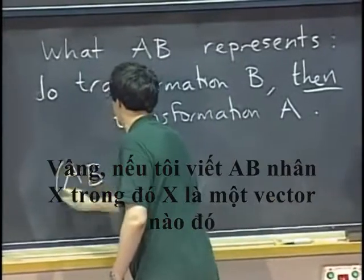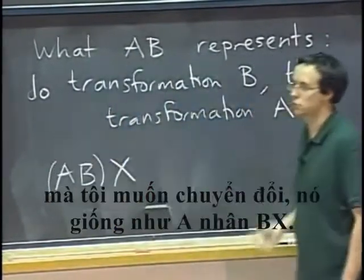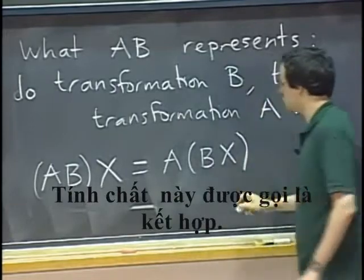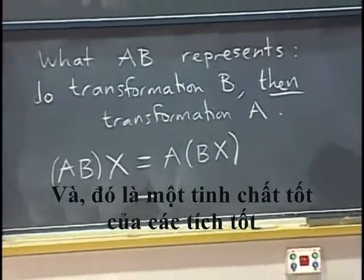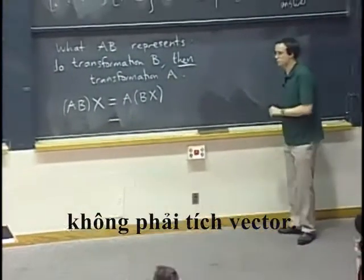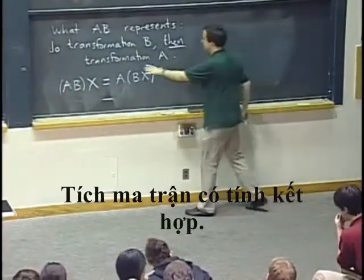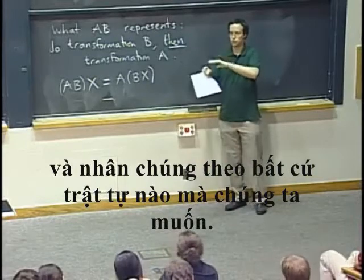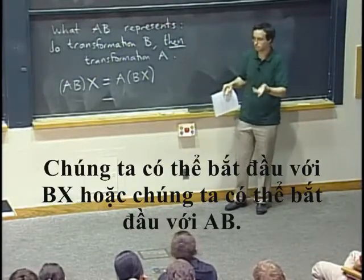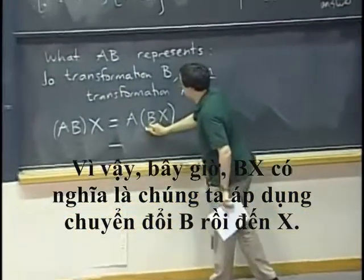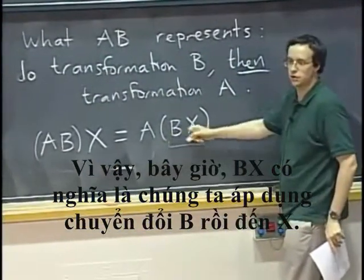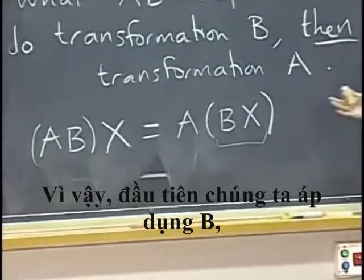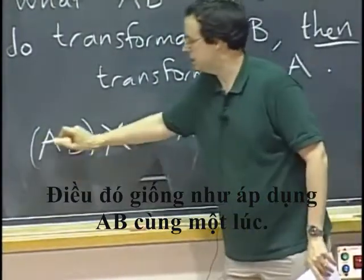If I write AB times x, where x is some vector that I want to transform, it's the same as A times Bx. This property is called associativity, and it's a good property of well-behaved products — not of the cross product, by the way. Matrix product is associative, meaning we can think of ABx and multiply in whichever order we want. Bx means we apply transformation B to x, then multiplying by A means we apply transformation A — so we first apply B, then A, which is the same as applying AB all at once.